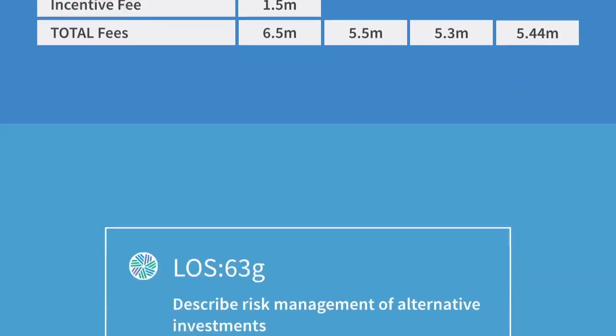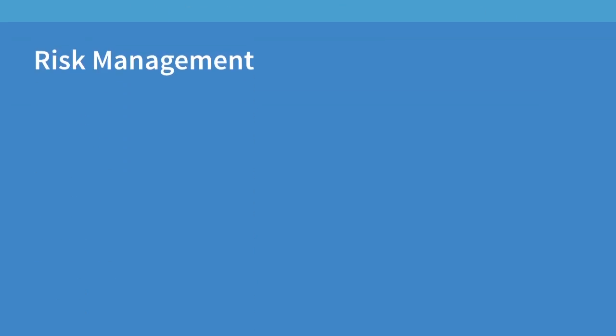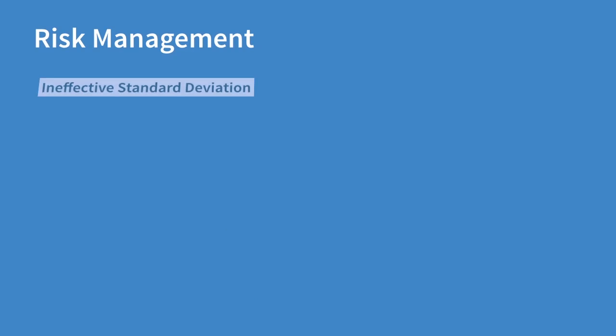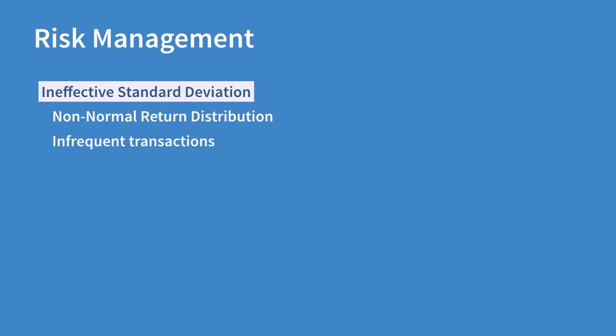Finally in this video we are going to tackle the last LOS of the course, which talks about risk management in alternative investments. When it comes to alternative investments, we cannot use standard deviation as a metric for risk. Generally, returns on these assets are not normally distributed and with infrequent transactions, actual returns are smooth, so we lose a clear picture of exactly how much fluctuation there may have been in the value of an asset over time. Given that standard deviation is out, that kills off the idea of using the Sharpe ratio and beta, which are based on standard deviation.